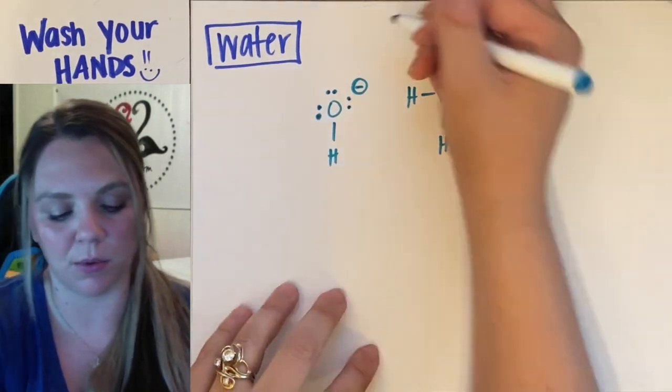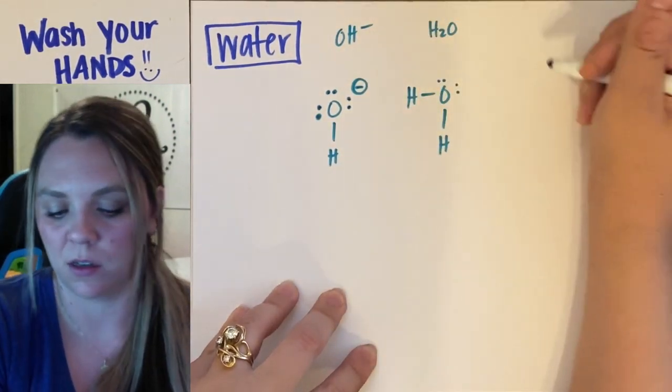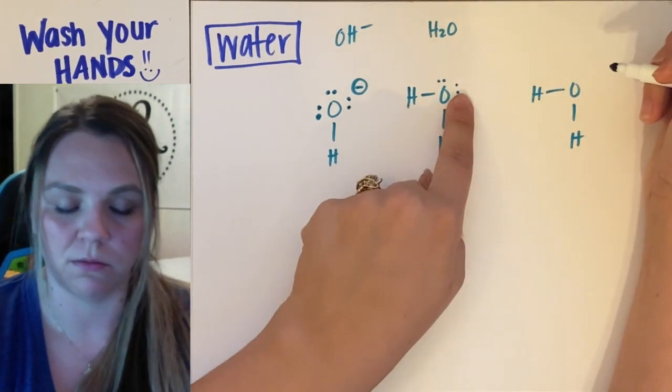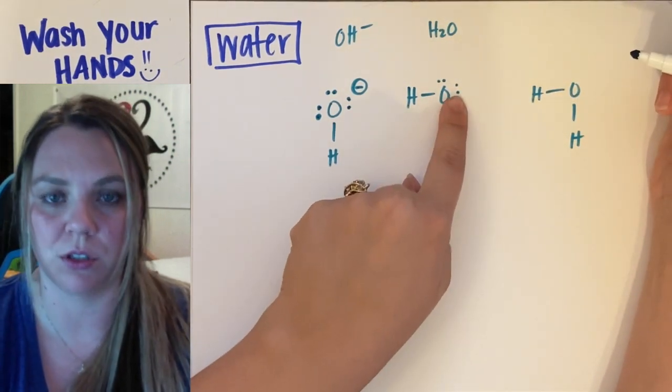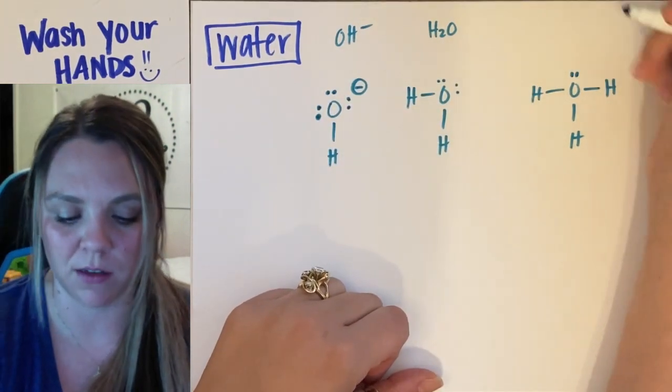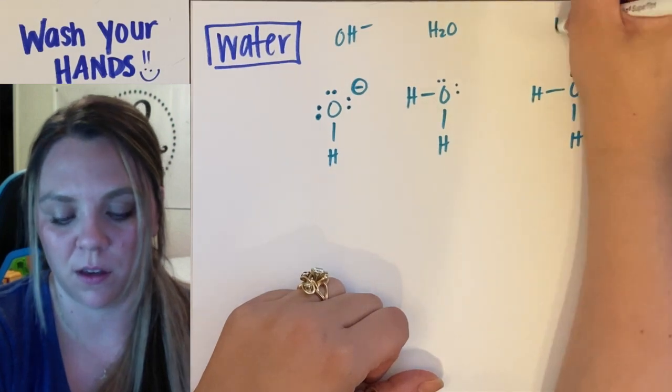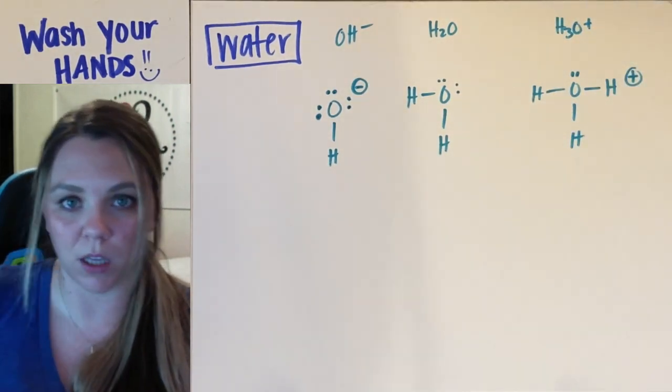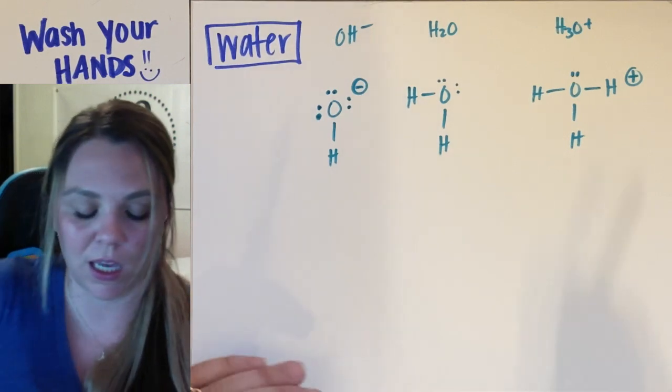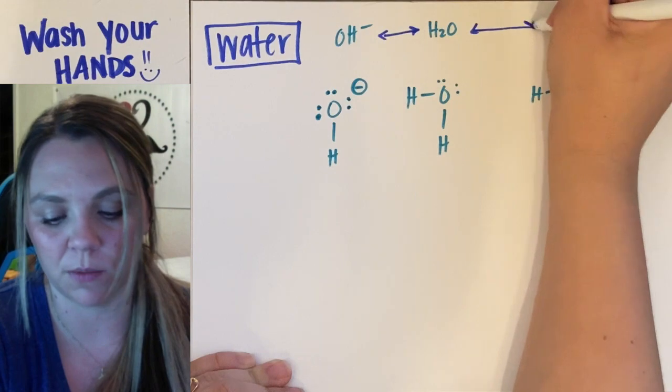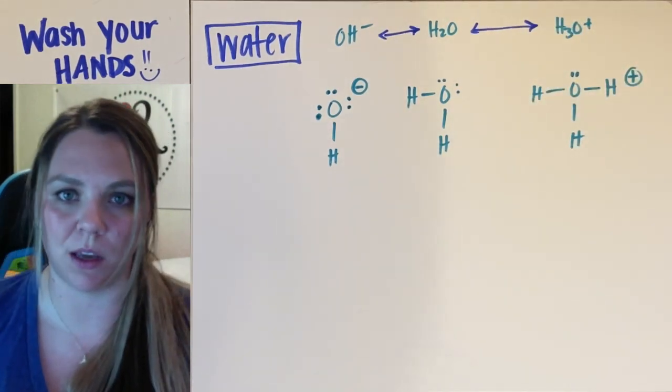It can also gain a proton if it had a hydrogen attached to either one of the lone pairs, doesn't really matter. And then it would be H3O plus. So water can go either which way. It can donate a proton to become OH minus. It can accept a proton to become H3O plus.